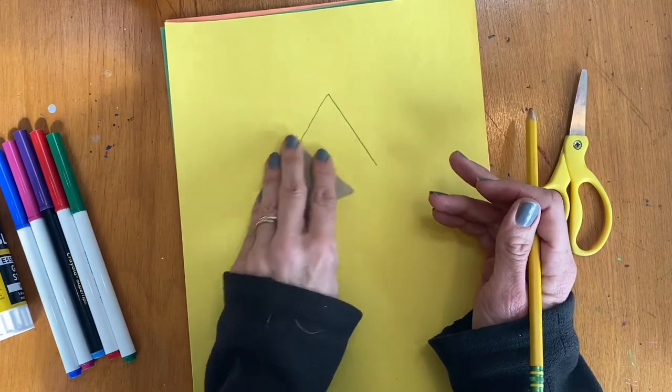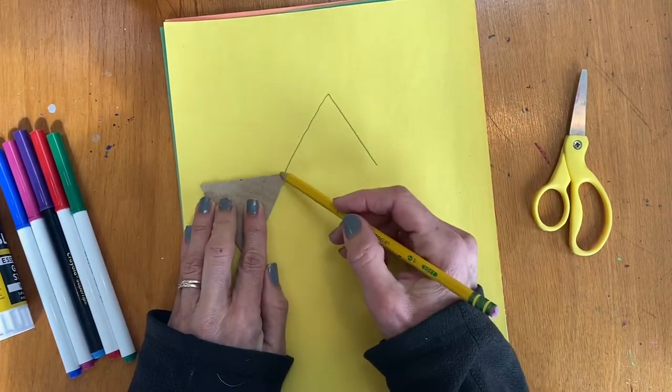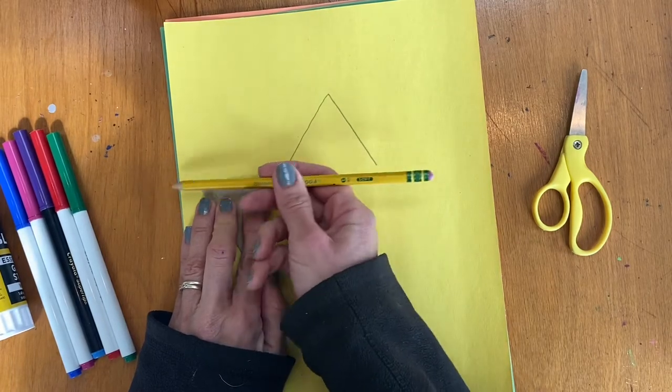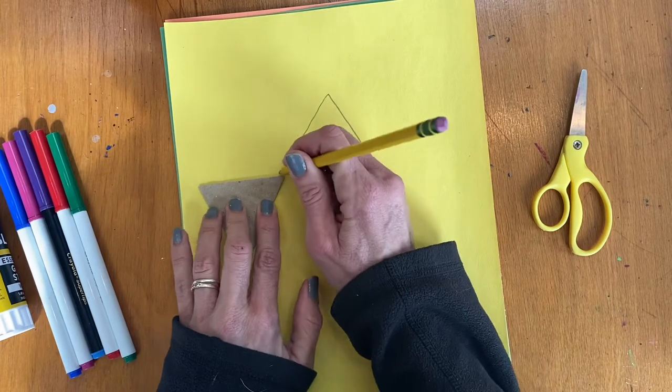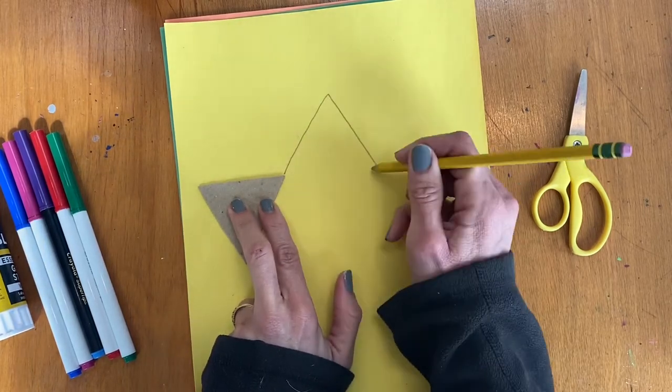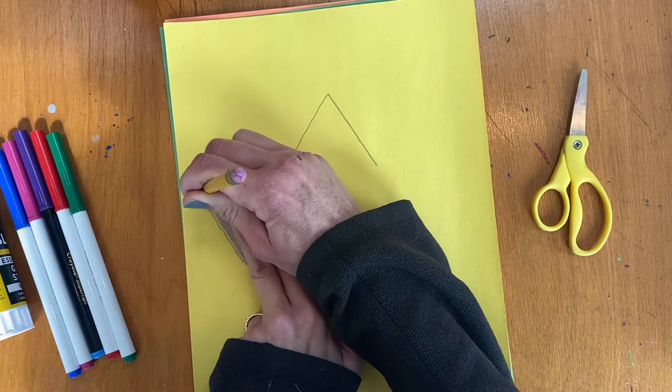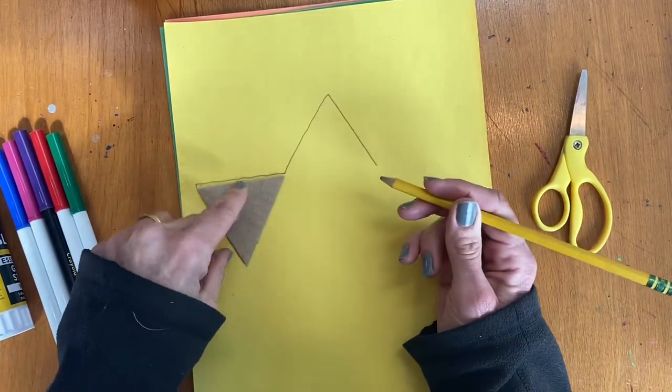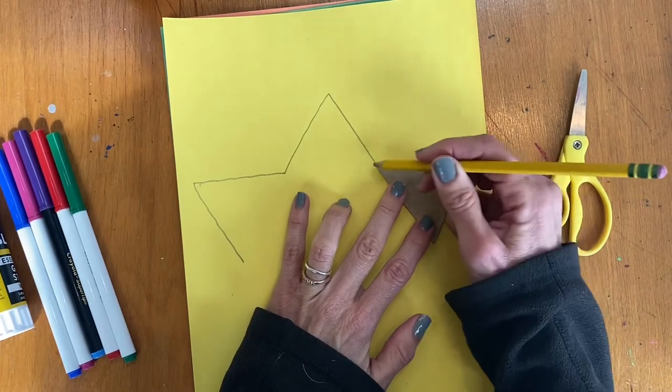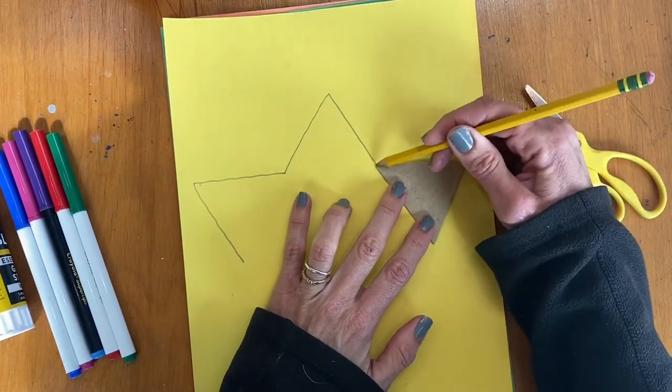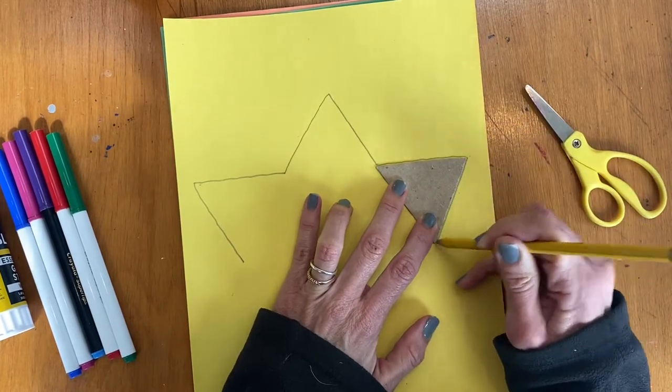Then you're going to take your triangle and turn it to the side so that this line is a horizontal line, the lying down line, and it connects right to the corner of that first part of the star. And I'm going to trace again two lines, not the bottom line. I'm going to put it on the other side and do the same thing. I'm going to line that up with the end of that line, hold it horizontal and trace two lines.